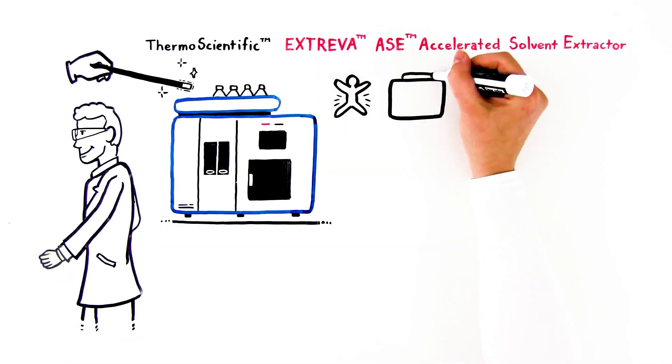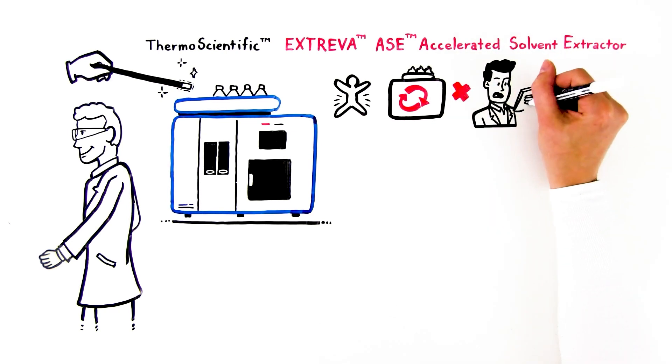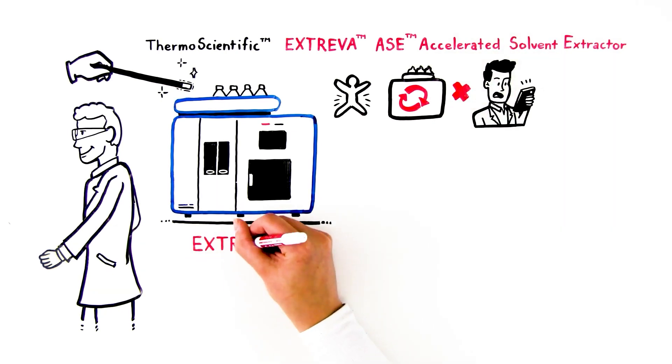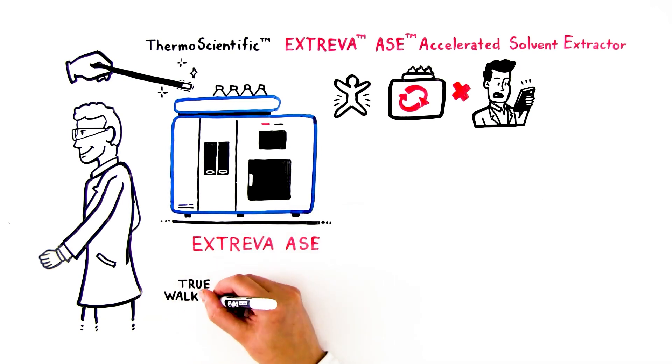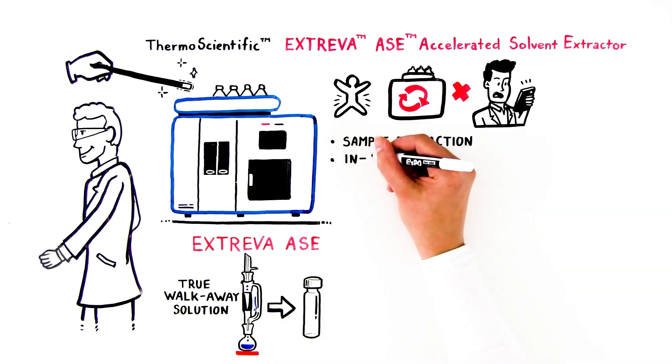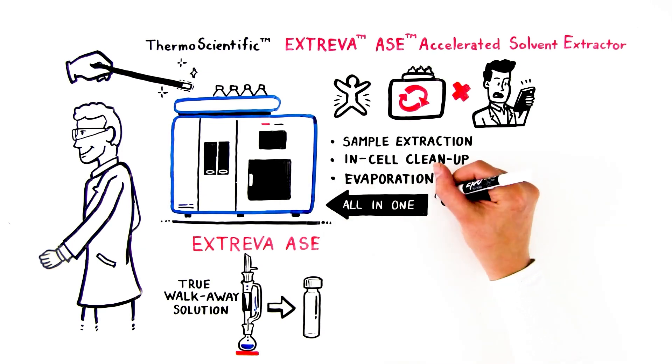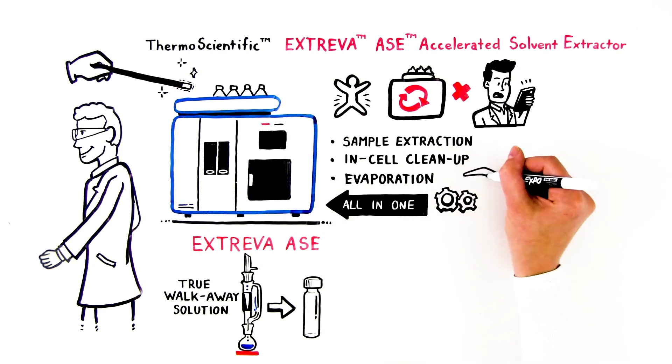Unlike people, automation systems are perfect for performing the same task repeatedly, and they don't make mistakes or get distracted. Extreva ASE gives you a true walk-away solution for sample-to-vial sample preparation. Sample extraction, in-cell cleanup, and evaporation are accomplished all in one seamless operation, without intervention.